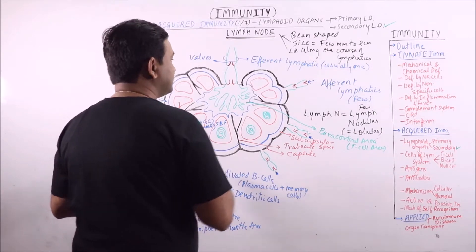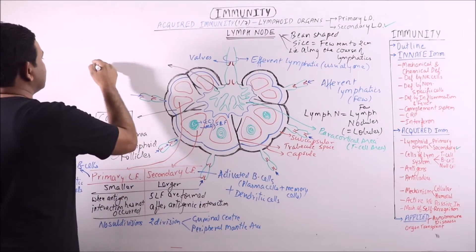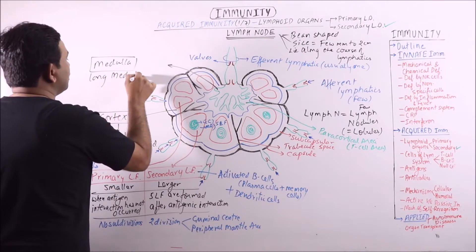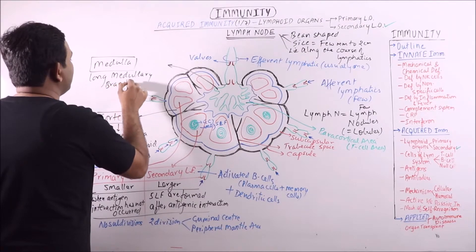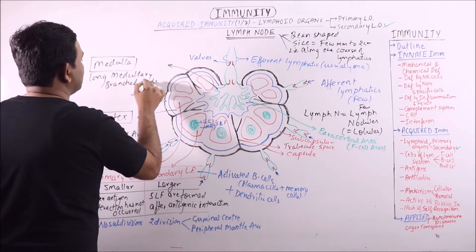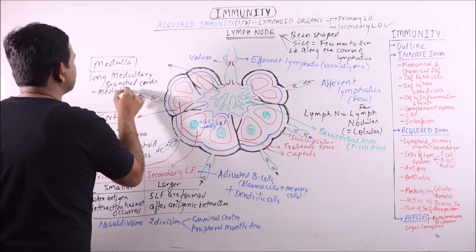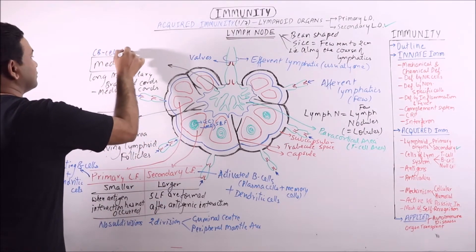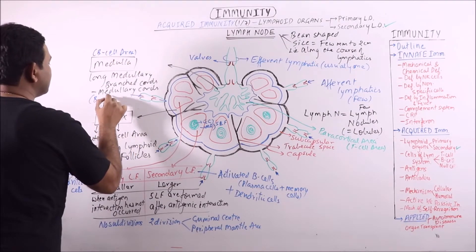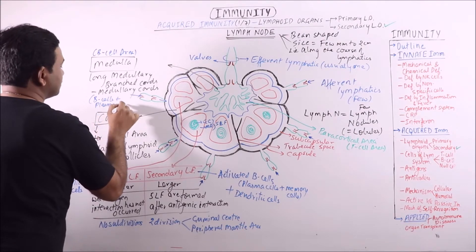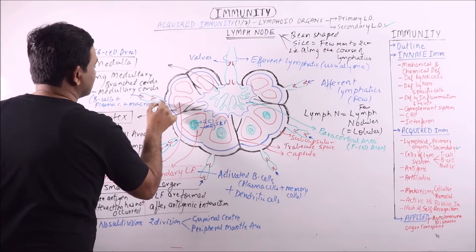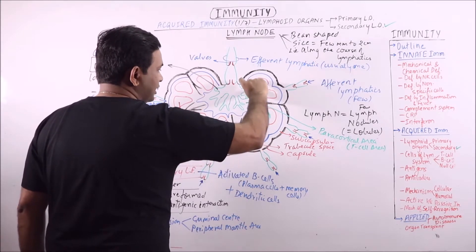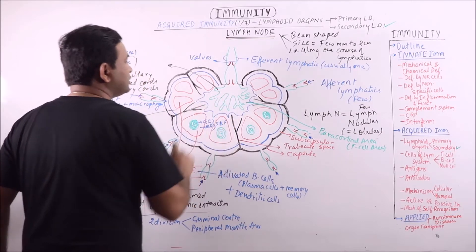The innermost region is the medulla, which contains long branched medullary cords. These medullary cords are again a B cell area, containing B cells, plasma cells, and macrophages. So to summarize: the cortex is the B cell area, the paracortical area is the T cell area, and the medulla is also a B cell area.